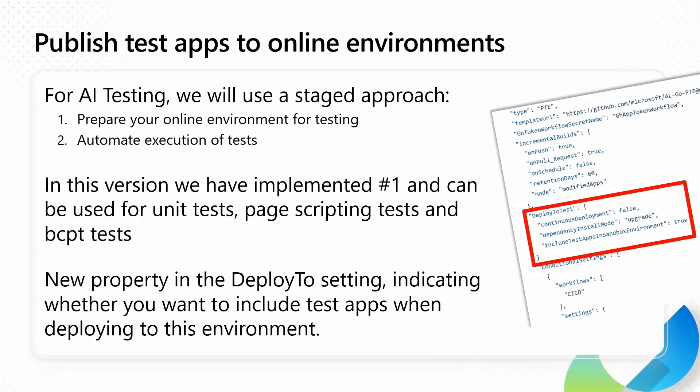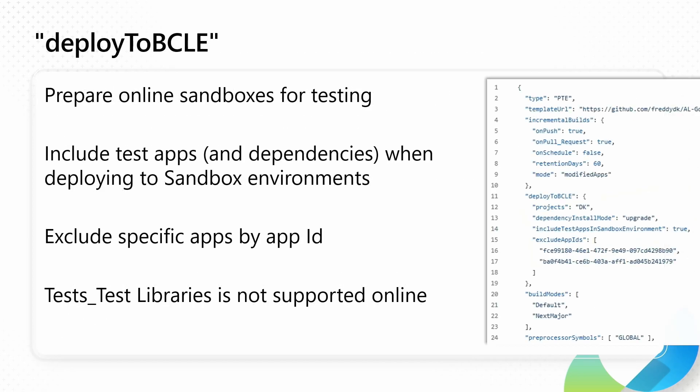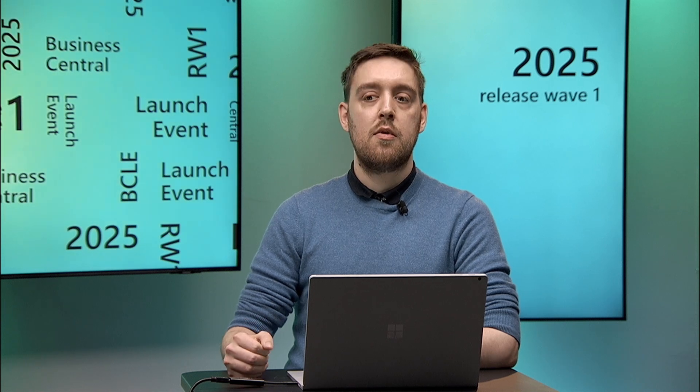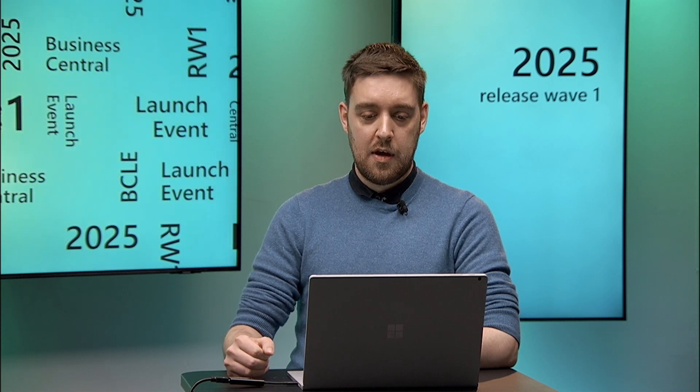This is under the deploy to structure, which you have used many times before for your deployments to environments. On top of that, we now also have the option to exclude apps by ID when you deploy. So in case you want to test only a specific app, you can now do that.